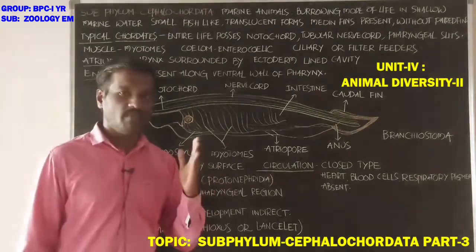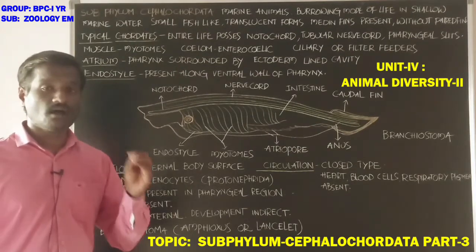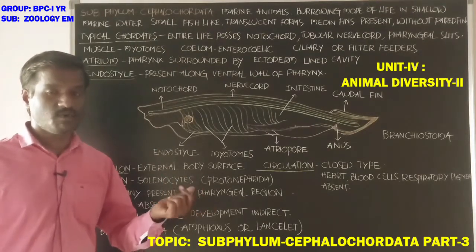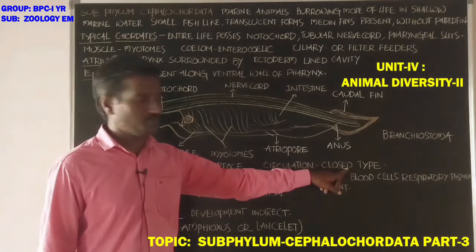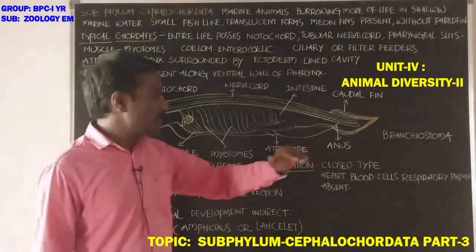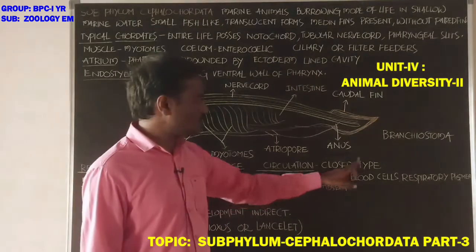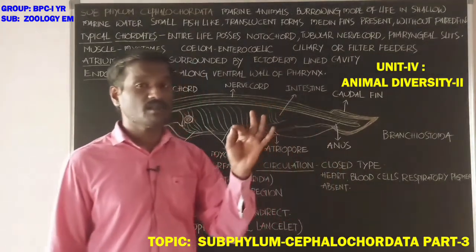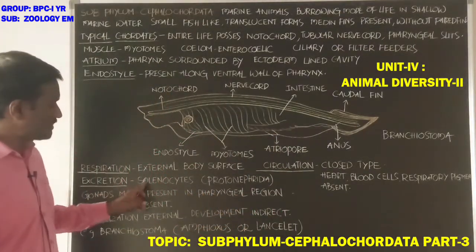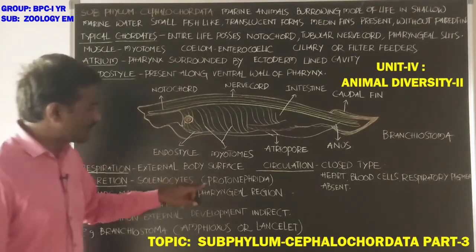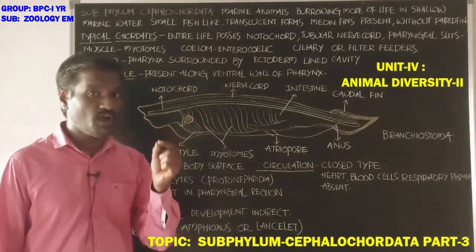Branchiostoma is a fish-like, translucent animal with median fins and without paired fins. Respiration: respiratory organs are absent; gas exchange occurs through the external body surface. Circulation is closed type; blood flows through blood vessels and capillaries. A heart is absent, and blood cells and respiratory pigment are absent.